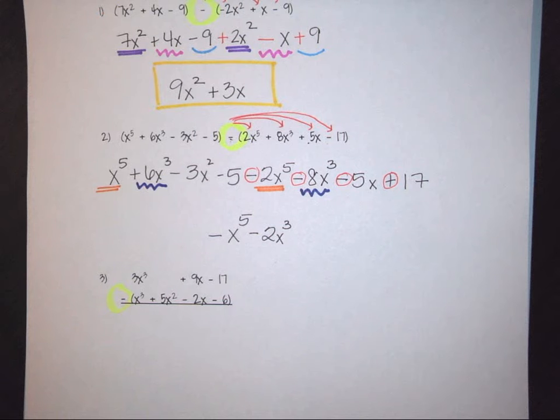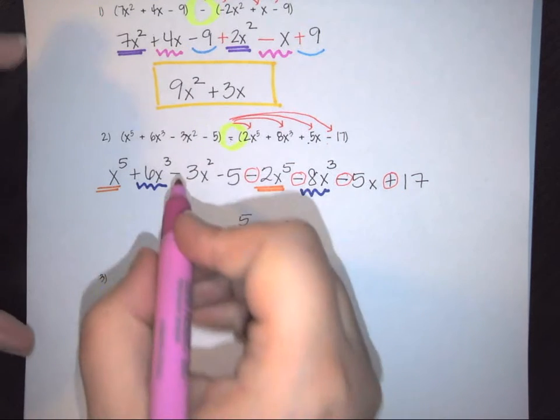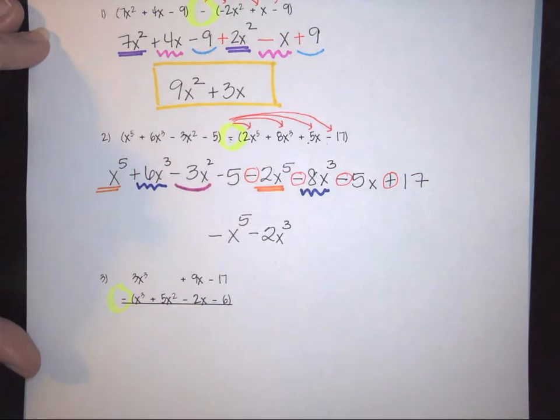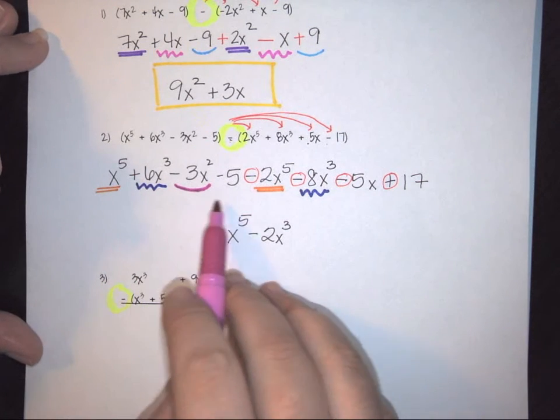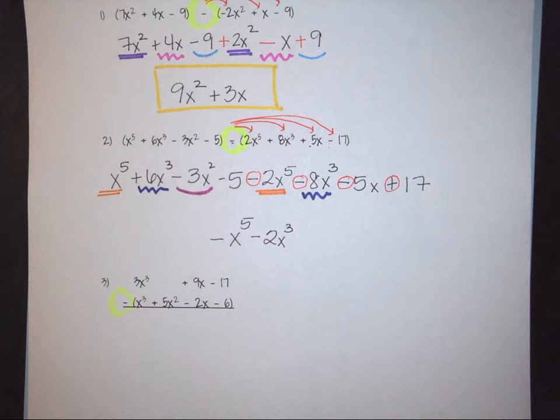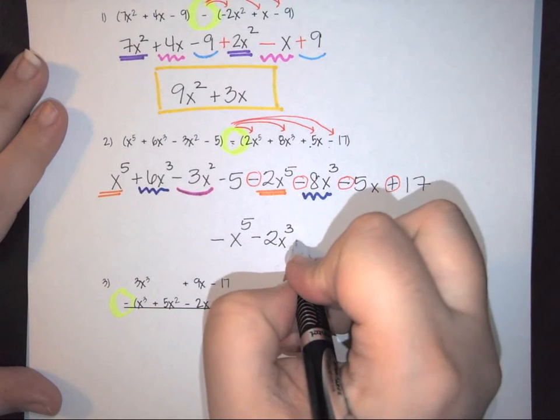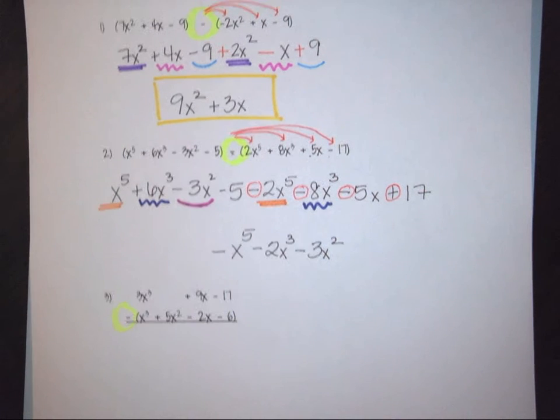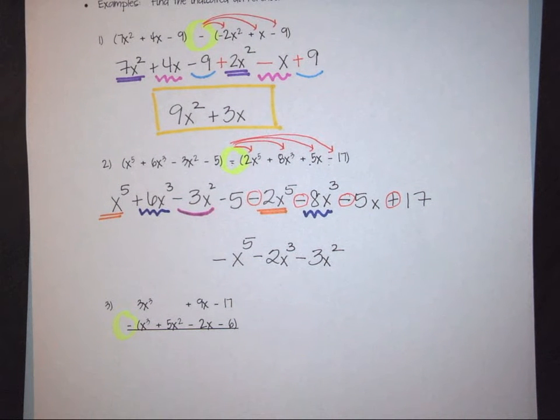I now need to look at the next term I have, which is this 3x squared. So if I'm looking down here, notice I don't have any other 3x squareds. Therefore, that means I have minus 3x squared. Since there's nothing else to combine it with, it stands on its own.